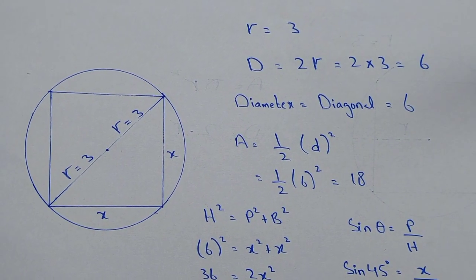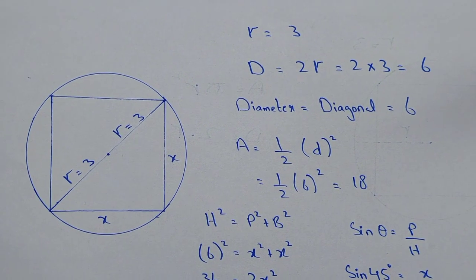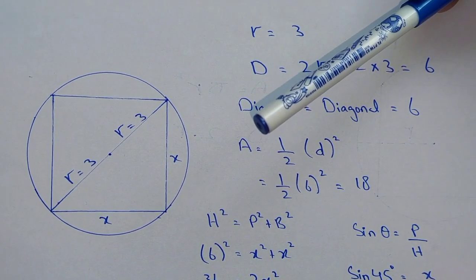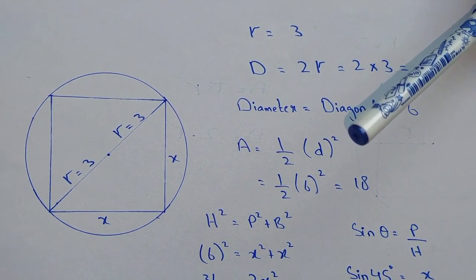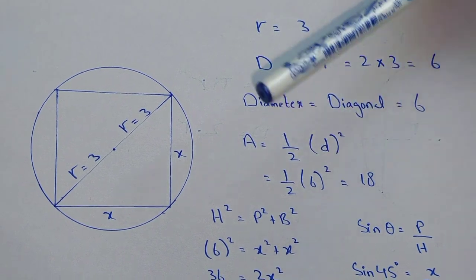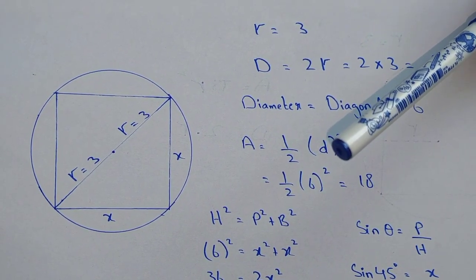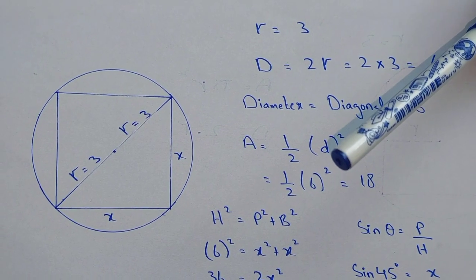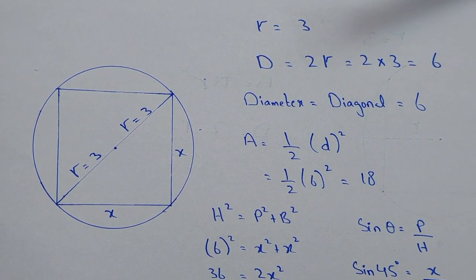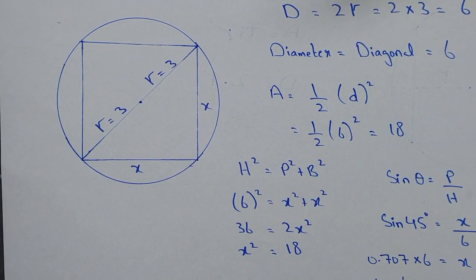If we are given the diagonal of the square, we can find out the area of the square. The formula for the area of a square using the diagonal is half into diagonal squared. Here the diagonal is 6, because 3 plus 3 equals 6. So half into 6 squared gives us 36 divided by 2, which equals 18.